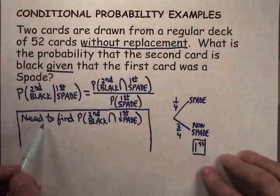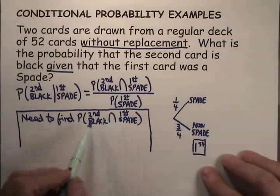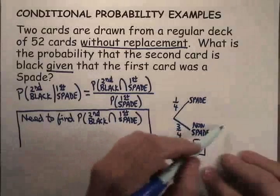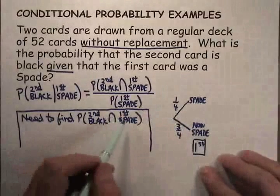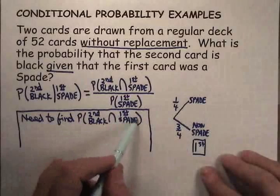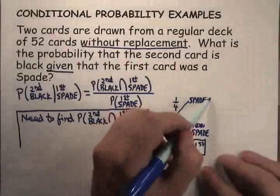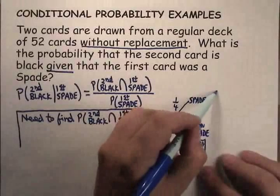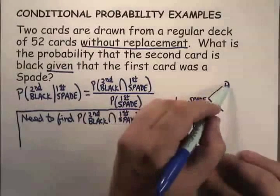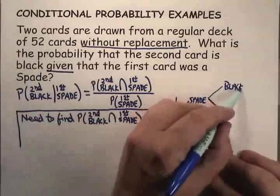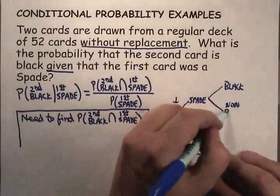We're looking for the probability of getting a first spade followed by a second black. We just need to follow the route that we need the probability for. If the first one's a spade, our next draw could either be a black card or not. We'll call it a non-black card.